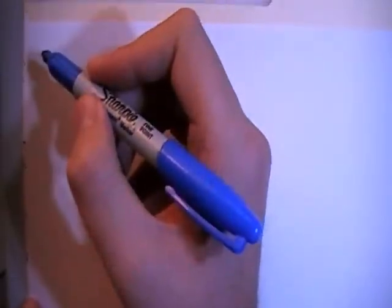Alright guys, in this video I'm going to show you how to draw the Lewis dot structure for the chlorate ion, ClO3-. So here we go.